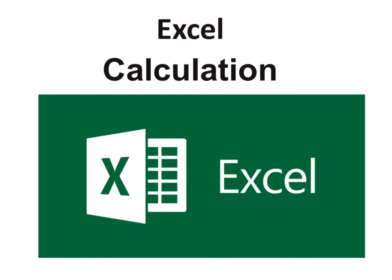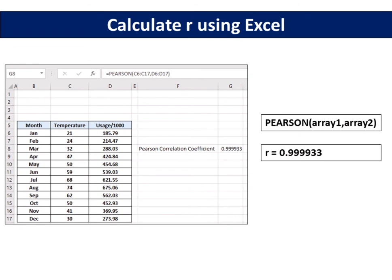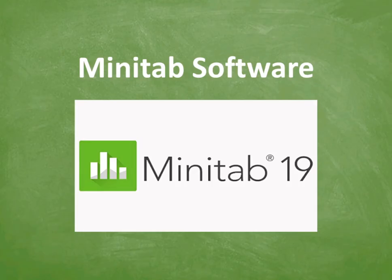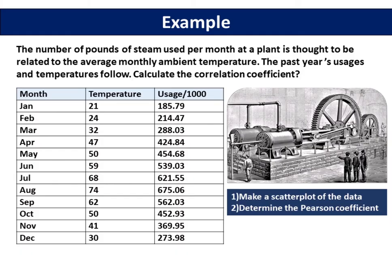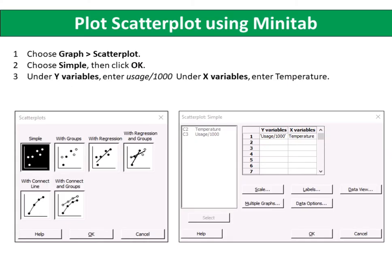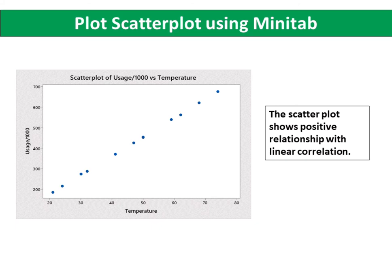How to find Pearson's correlation coefficients using Microsoft Excel? Next, I am going to show you the steps of determining the scatterplot and Pearson's correlation coefficient using Minitab software. First, we create a scatterplot to evaluate the relationship between temperature and usage per 1000. A scatterplot is the first tool we use to evaluate these relationships. This tool enables us to see patterns in the data and helps guide further statistical analyses. The team can use correlation to quantify the strength and direction of the relationship. Choose Graph, Scatterplot, choose Simple, then click OK. Under Y variables, enter usage per 1000. Under X variables, enter temperature. The scatterplot shows a positive relationship with linear correlation.